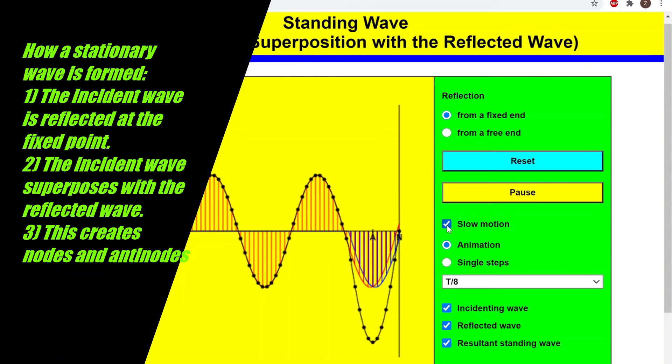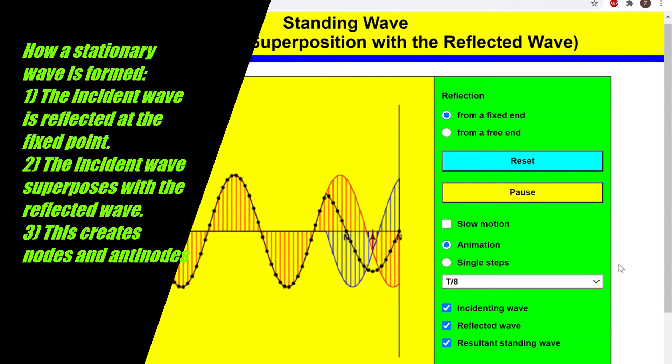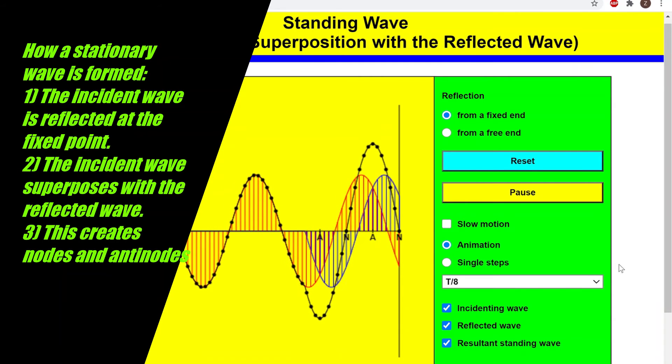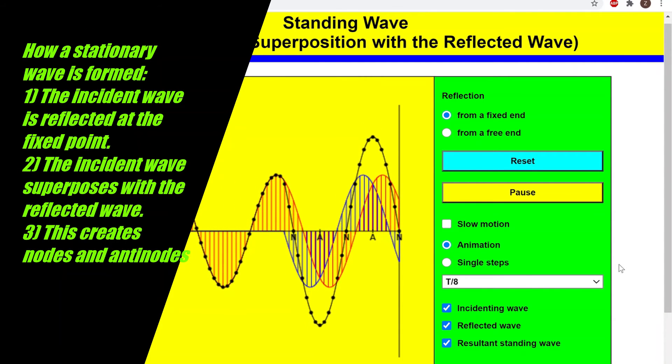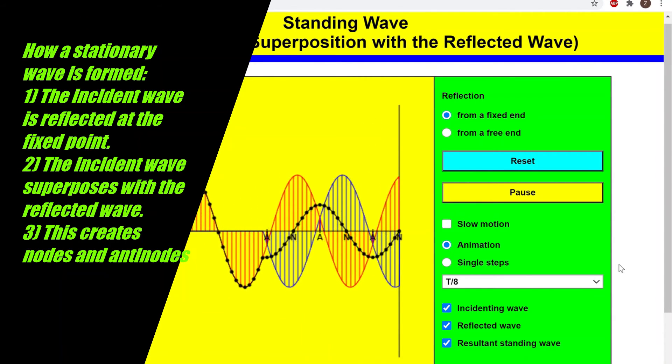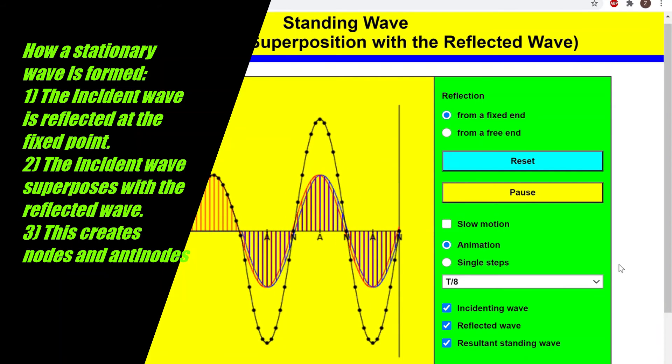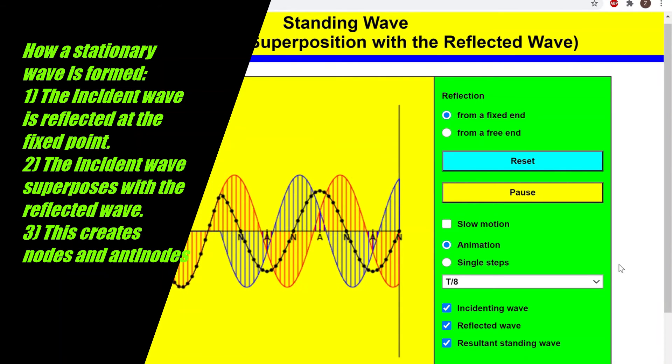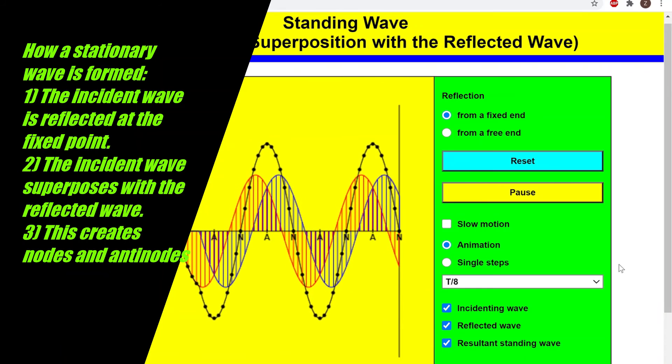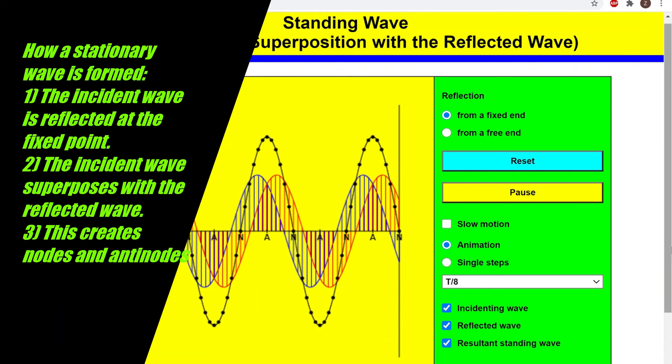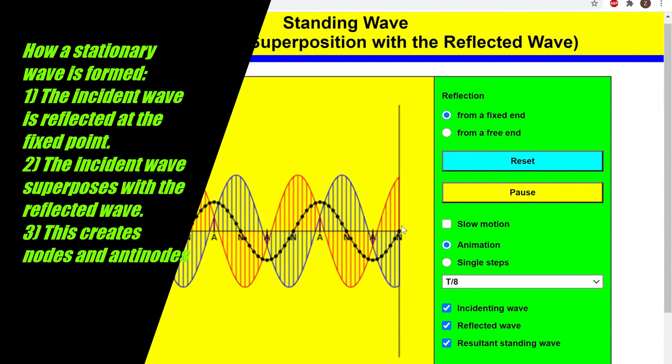The interference will actually produce a pattern formed of nodes and anti-nodes, which is actually our standing wave, our stationary wave. We can clearly see both the incident wave over here.